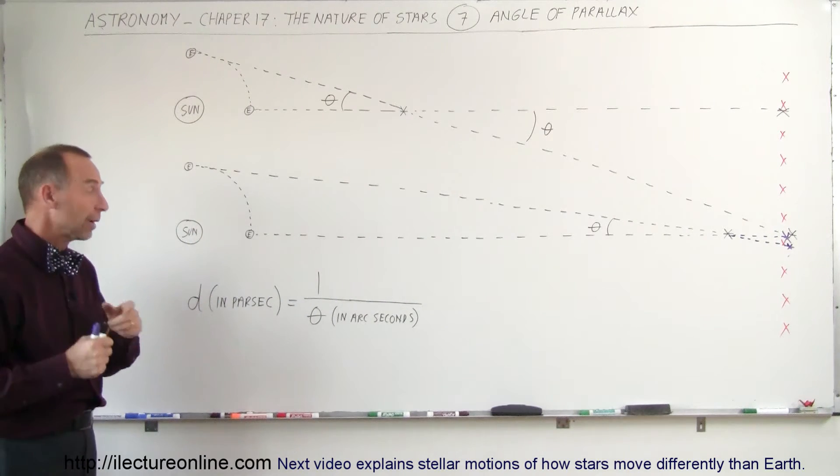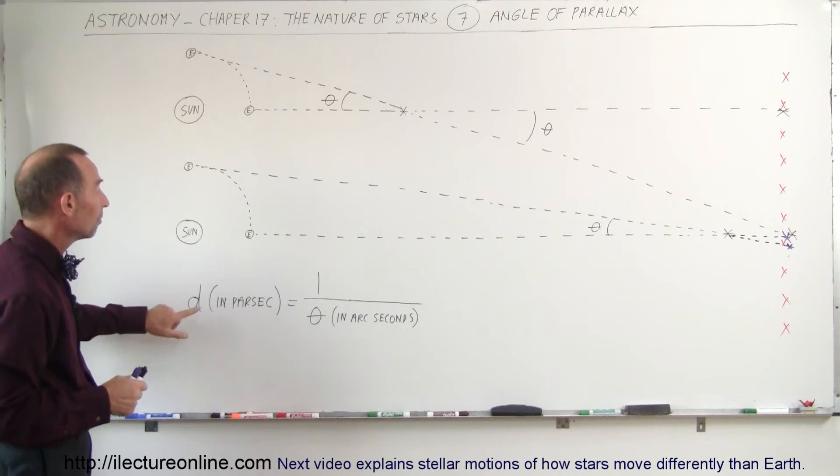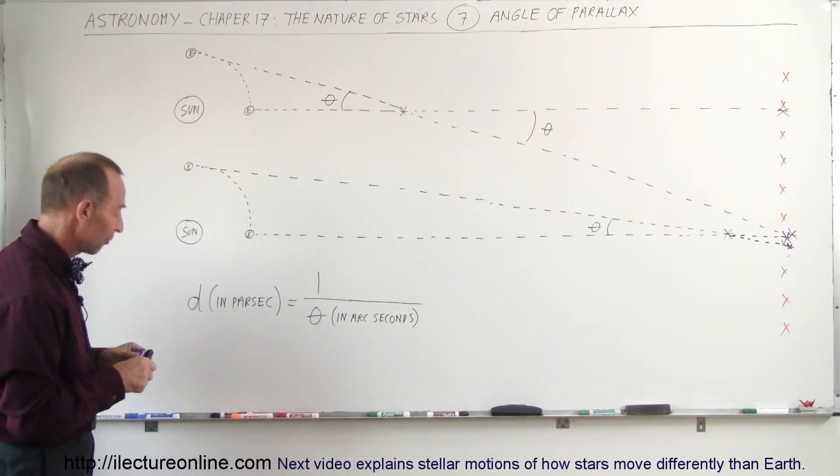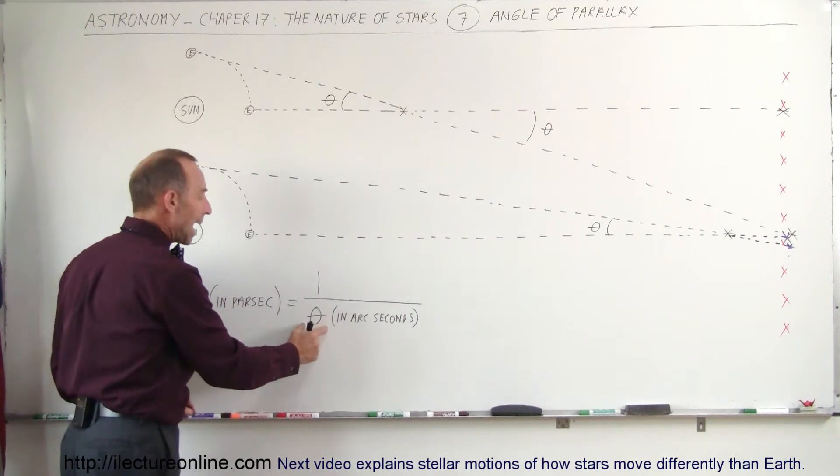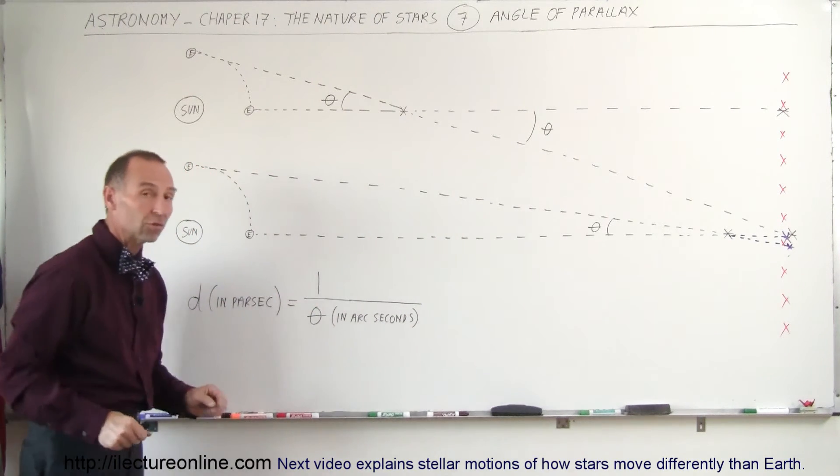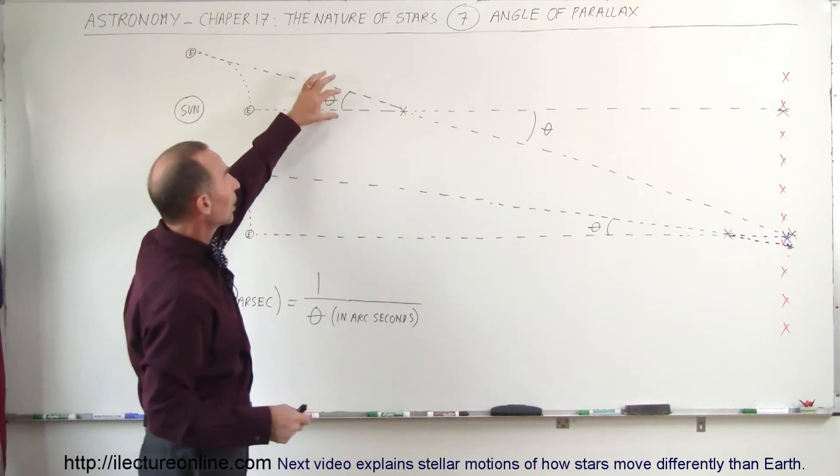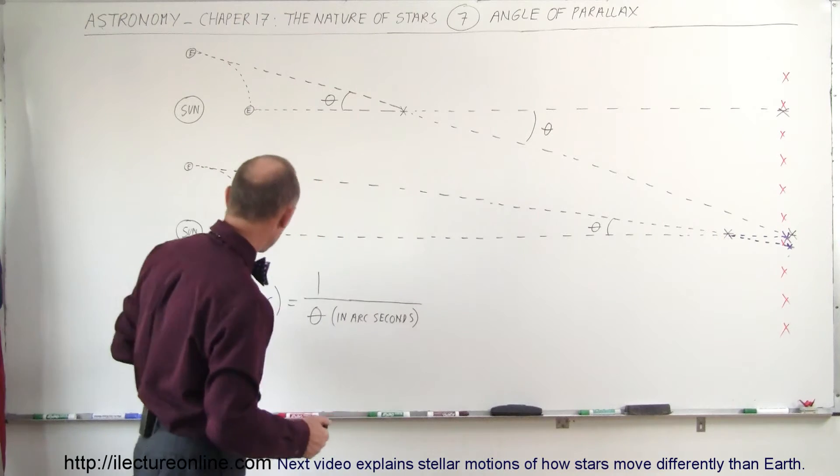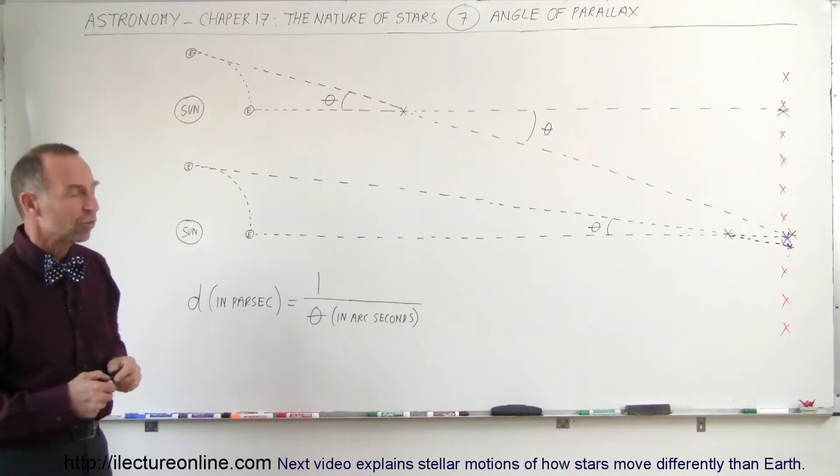The equation to actually figure out the distance is right here. The distance in parsecs to that star that we are trying to find the angle of parallax of is equal to one divided by the angle measured in arc seconds. In other words, if the angle that we measure is one arc second, then the distance to the star would be one parsec, which is 3.26 light years.